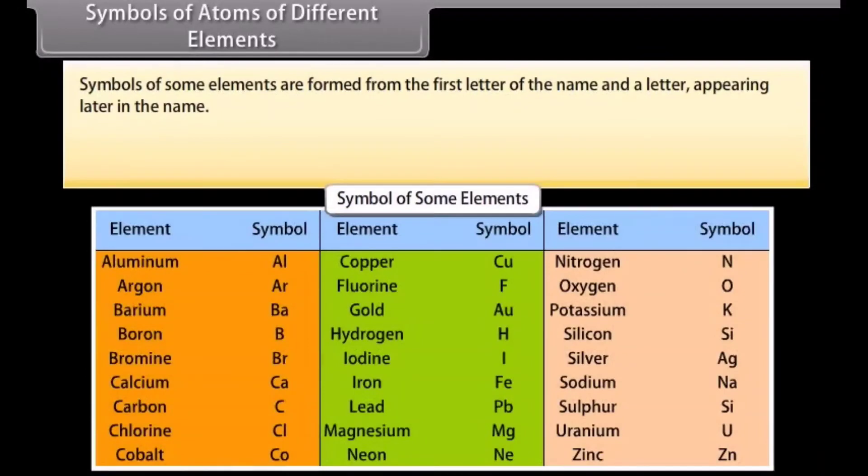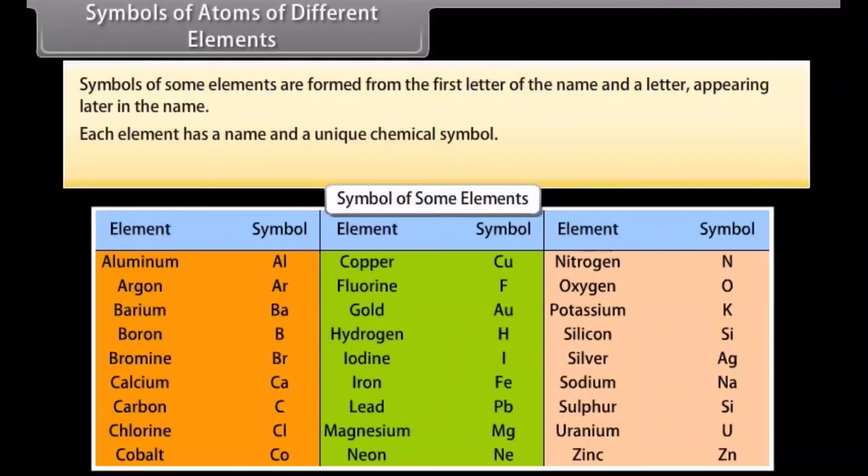Symbols of some elements are formed from the first letter of the name and a letter appearing later in the name. Each element has a name and a unique chemical symbol.